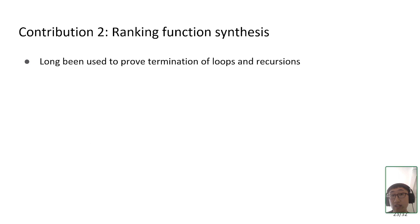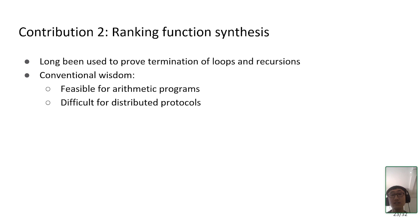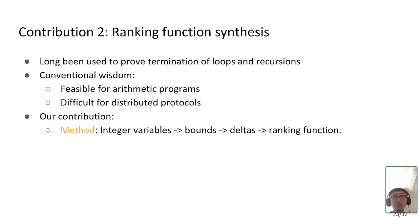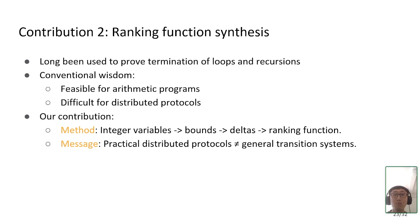The question is: how do we obtain the ranking function? Ranking functions have long been used to prove termination of loops and recursions. Conventional wisdom claims that ranking function synthesis is feasible mostly for arithmetic programs, and is difficult for distributed protocols or more general first-order transition systems. Our contribution is a new method where we analyze integer variables, their upper and lower bounds, and how they change in each transition (which we call deltas), and then derive a ranking function. This also serves as a message that practical distributed protocols are not necessarily the same as general transition systems — they have properties that make ranking function synthesis easier than previously believed.